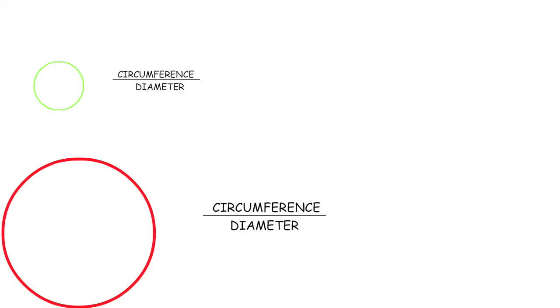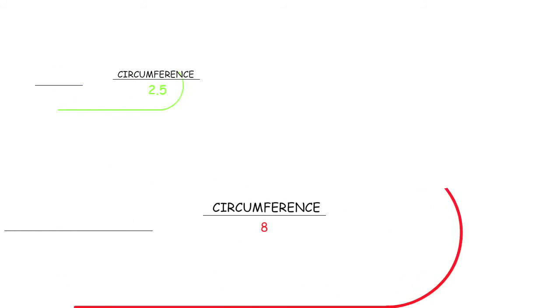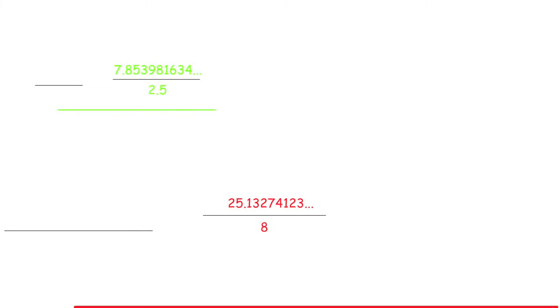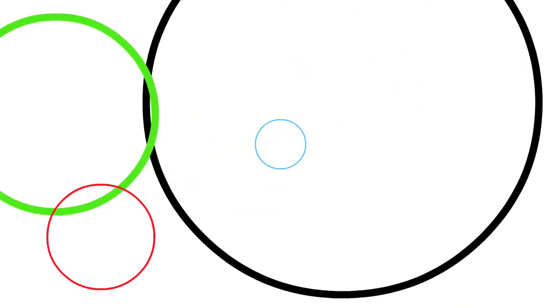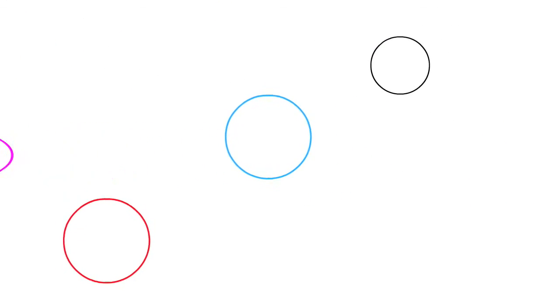Now we can take any size circle and measure their circumference diameter ratio, and we see that we always get the constant pi. Regardless of size, pi is going to be the constant of any circle that exists.